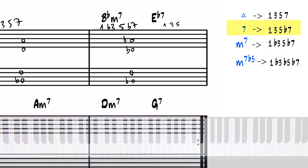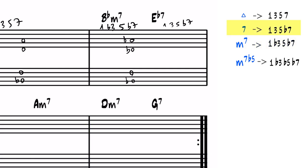D flat 7 is a dominant chord, so it has to be 1, 3, 5, flat 7. E flat to G is a major 3rd. That's good. We have to change the B to B flat to make it a perfect 5th from E flat. And then E flat to D is a major 7th, so we need to change the D to a D flat to make it the flat 7th. And now the drop 2 and 4 voicing.